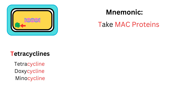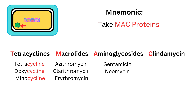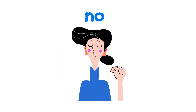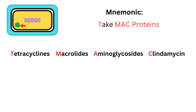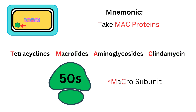You can remember these antibiotics using the mnemonic TEC-MAC proteins: T for tetracyclines, M for macrolides, A for aminoglycosides, C for clindamycin, and P for protein synthesis — what these antibiotics inhibit. Macrolides and clindamycin act on the 50S subunit, while the others act on the 30S subunit. Remember this by thinking of 50S as the bigger or macro subunit — M for macrolides, C for clindamycin.